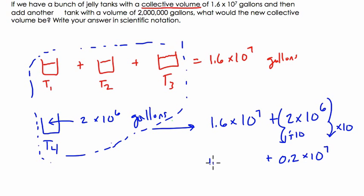So now we have both numbers in terms of 10 millions. So now I can line things up. 1.6 plus 0.2, we can line those places up exactly to get 1.8. And this is in terms of 10 millions, so our answer is 1.8 times 10 to the 7th.